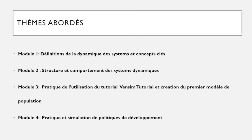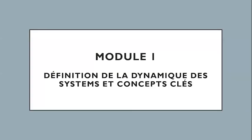Le quatrième module porte sur des cas pratiques de simulation des politiques de développement. Nous allons voir comment mettre en œuvre des politiques éducatives, sanitaires et agricoles, et pouvoir choisir entre ces différents types de politiques les meilleures pour obtenir plus de croissance macroéconomique. Voilà la fin de ce premier module d'introduction. Dans une prochaine vidéo, nous reviendrons sur le module 1, portant sur la définition de la dynamique des systèmes. Je vous remercie pour votre attention et à bientôt.